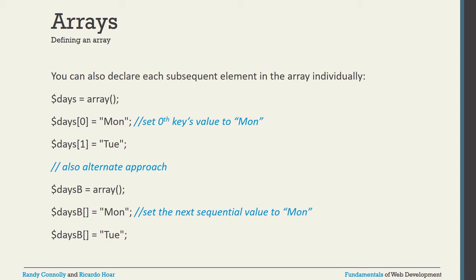You can also declare array values individually with keys. For example: dollar-sign days equals array() for an empty array, then set dollar-sign days[0] equals 'Mon', dollar-sign days[1] equals the next value, and so on. Without specifying keys, if you just write dollar-sign daysB equals value sequentially, the first value gets index 0, the next gets index 1 by default.